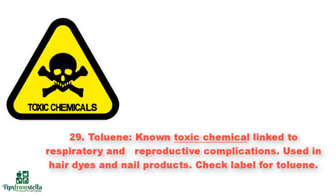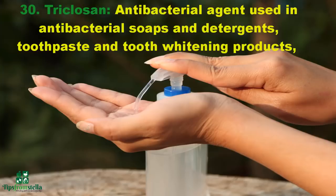Number twenty-nine: toluene. It is a known toxic chemical linked to respiratory and reproductive complications. Used in hair dyes and nail products. Check labels for toluene. Number thirty, and lastly: triclosan. It is an antibacterial agent used in antibacterial soaps and detergents, toothpaste, tooth whitening products, antiperspirants or deodorants, shaving products, creams, and color cosmetics.